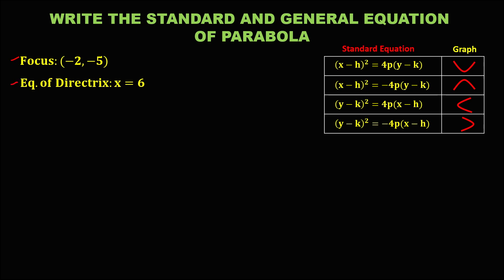First, we need to graph the given. For the graph: opens upward — this is the formula for the standard equation; opens downward — the formula for the standard equation; opens to the right; and opens to the left. These are the different formulas for the standard equation.